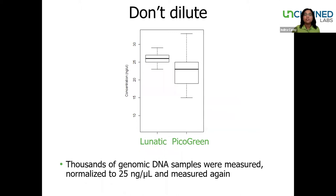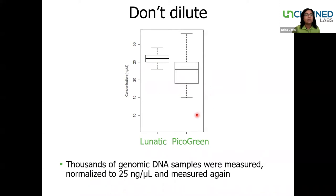This example shows the impact that multi-step procedures have on readout accuracy. This experiment was run by one of our high-throughput customers, and what they did was to measure thousands of genomic DNA samples using either Lunatic or PicoGreen. Based on those results, the samples were adjusted to 25 nanograms per microliter and read again. You can see there's a much wider variation in the results with PicoGreen compared to the samples that were read on the Lunatic.